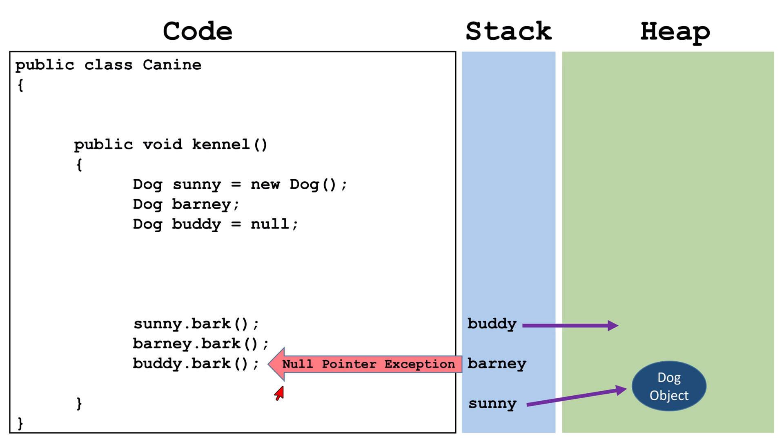It's unusual to get a null pointer exception when you have explicitly set a variable to null, like with buddy. Let's look at some cases where you might have a variable set to null without realizing it. Here, we have declared a field variable major of type dog and left it uninitialized. An uninitialized field of an object type will automatically be initialized to null. Contrast that with a local variable of an object type, like barney, which will remain uninitialized.